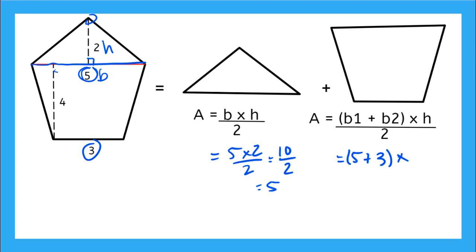And this is going to give me 5 plus 3 gives me 8. 8 times 4 is 32 over 2. That's going to be equal to 16.